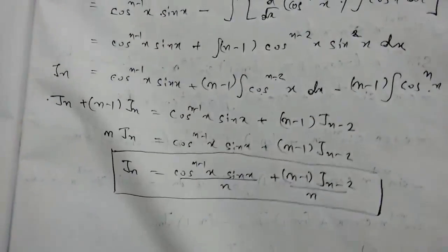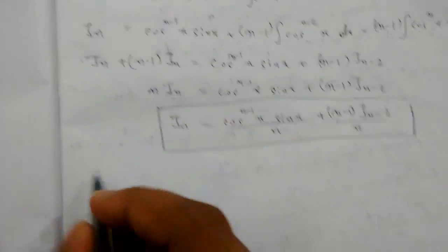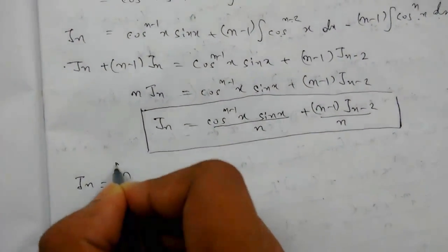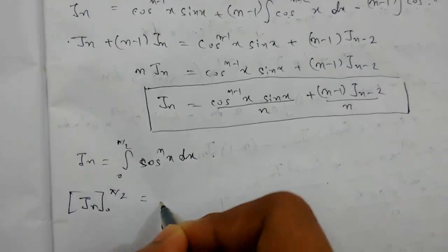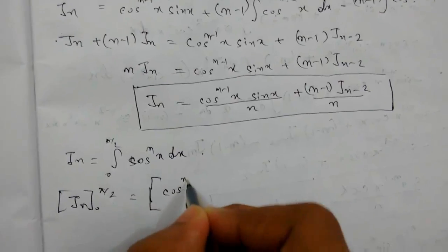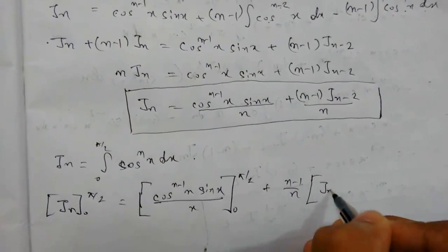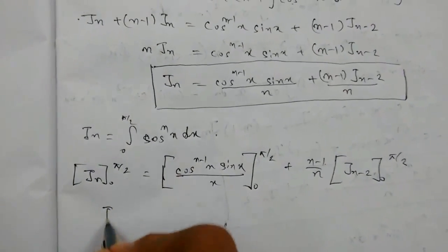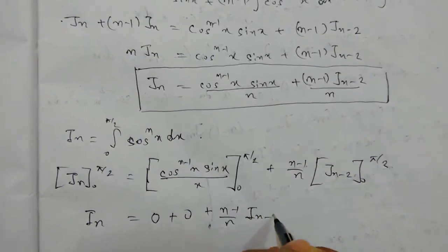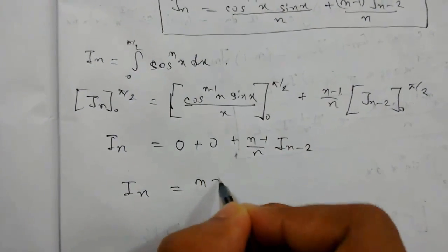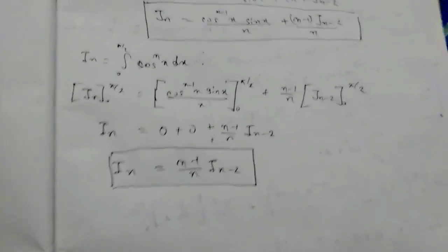Now we need to calculate the definite integral reduction formula from 0 to π/2. We assume In to be the integral from 0 to π/2 of cos^n(x) dx. Putting in the limits, the boundary term cos^(n-1)(x)·sin(x) evaluated from 0 to π/2 gives 0, since cos(π/2) = 0 and sin(0) = 0. So we get the reduction formula: In = (n-1)/n times I(n-2).